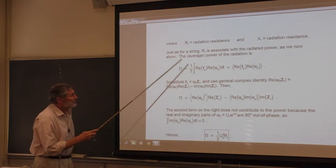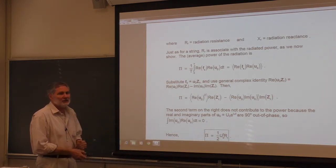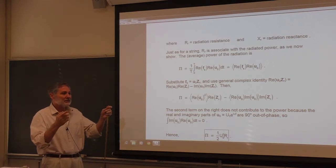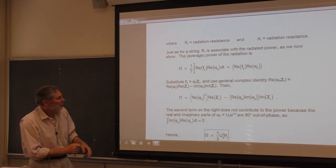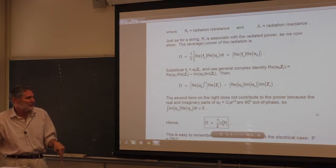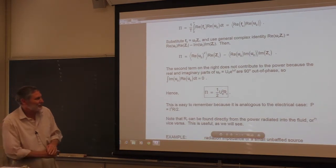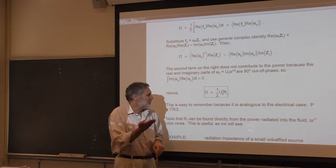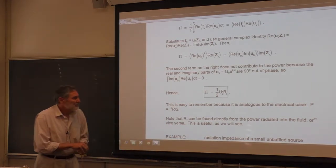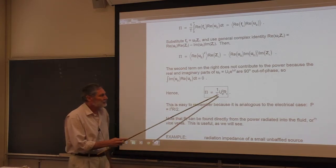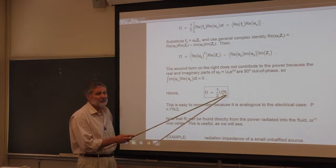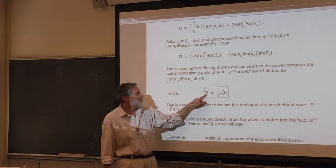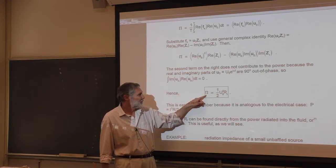The radiation resistance is important because it is connected with the total acoustic radiated power. By energy conservation, the average power you put in equals the average acoustic power. The total radiated power is one half times the square of the peak surface velocity times the radiation resistance — the same form as for a resistor. Once you know the radiation resistance, you can calculate the acoustic radiated power.